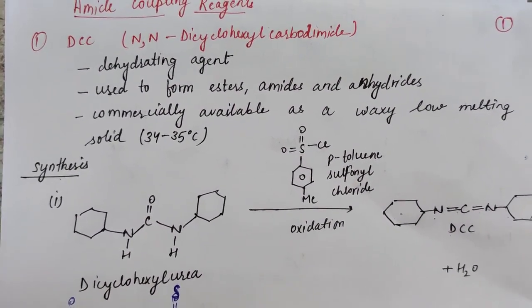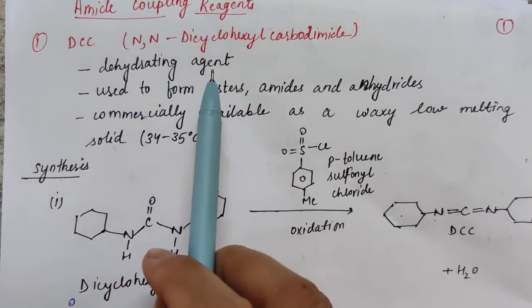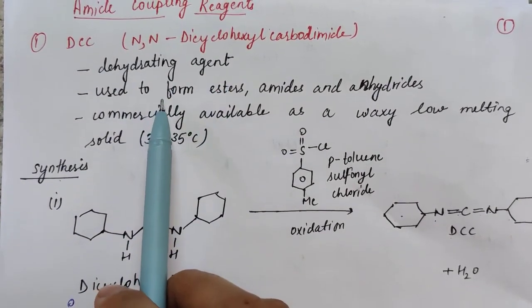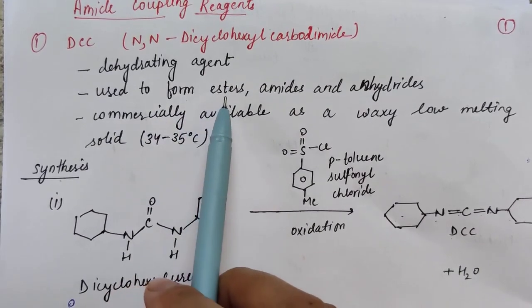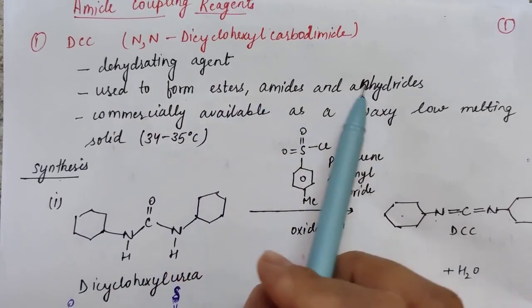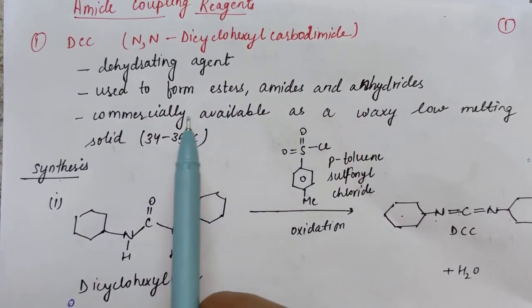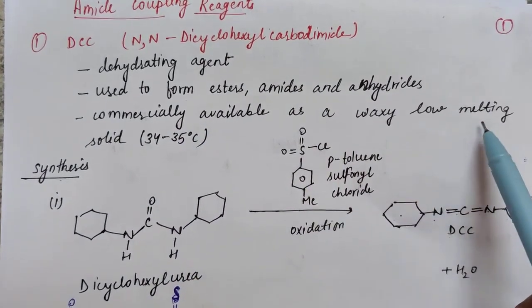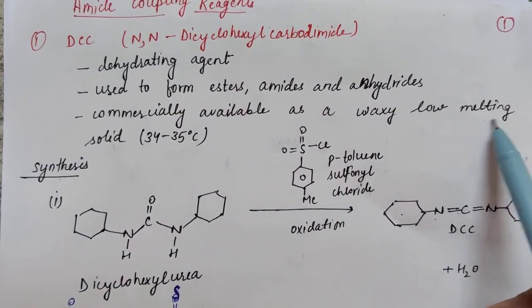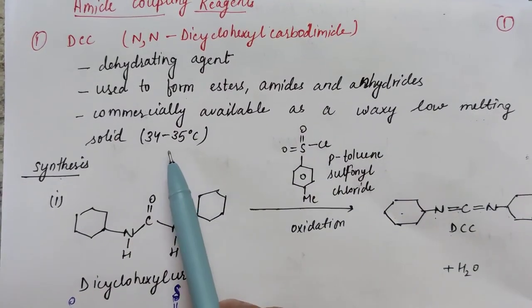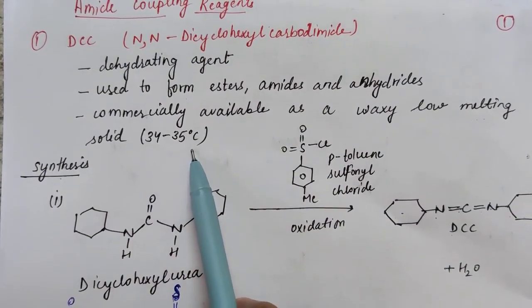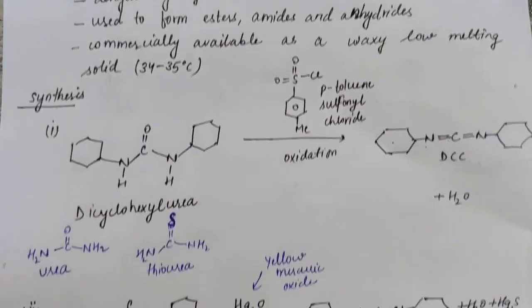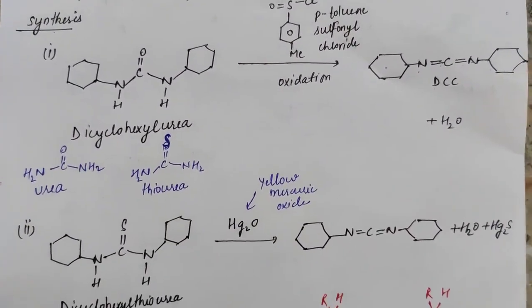DCC acts as a dehydrating agent and is mainly used to form esters, amides, and anhydrides. It is commercially available as a waxy solid with a low melting point of around 34 to 35 degrees Celsius.